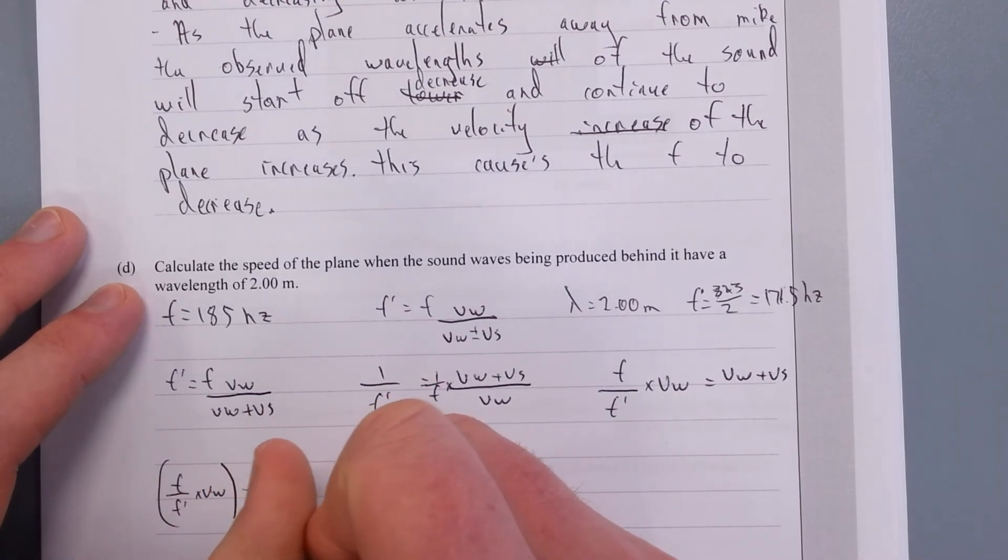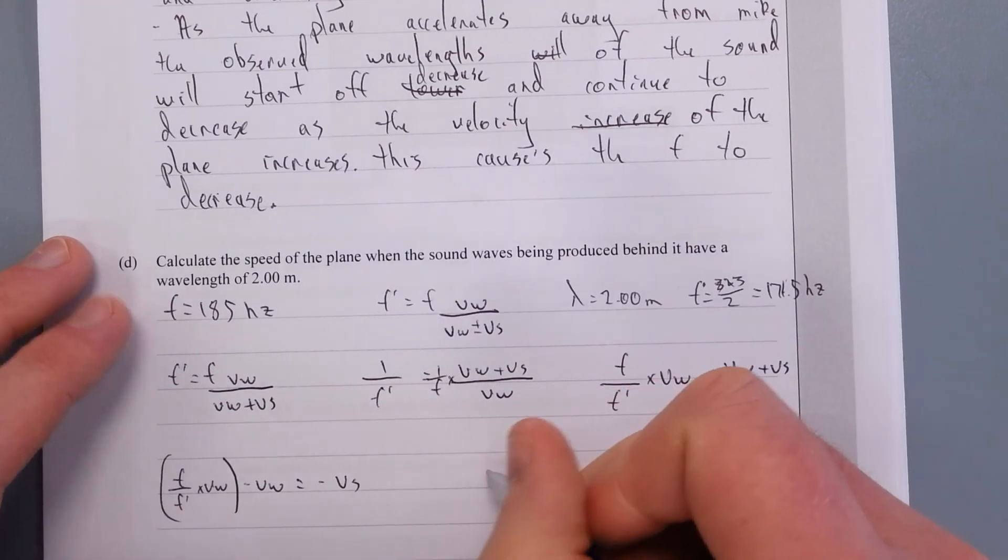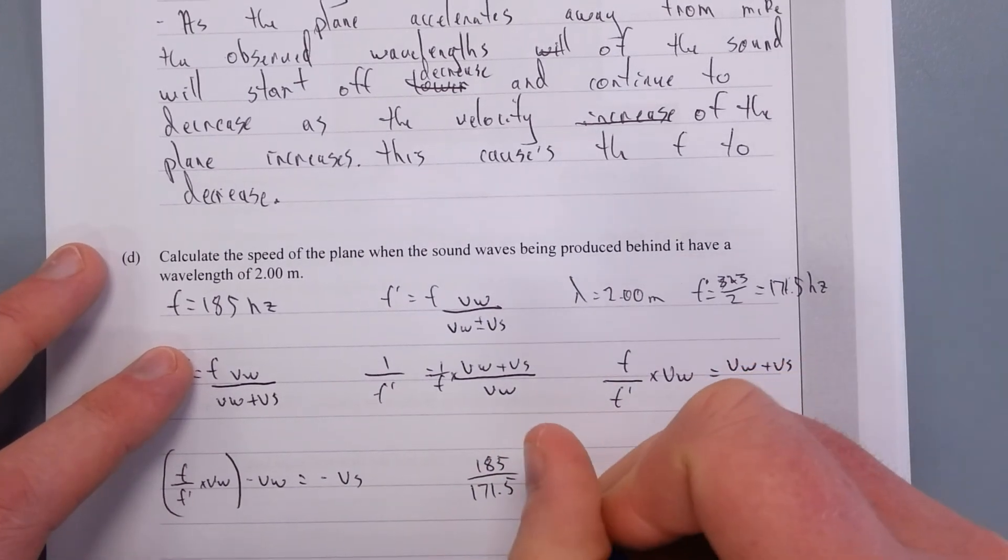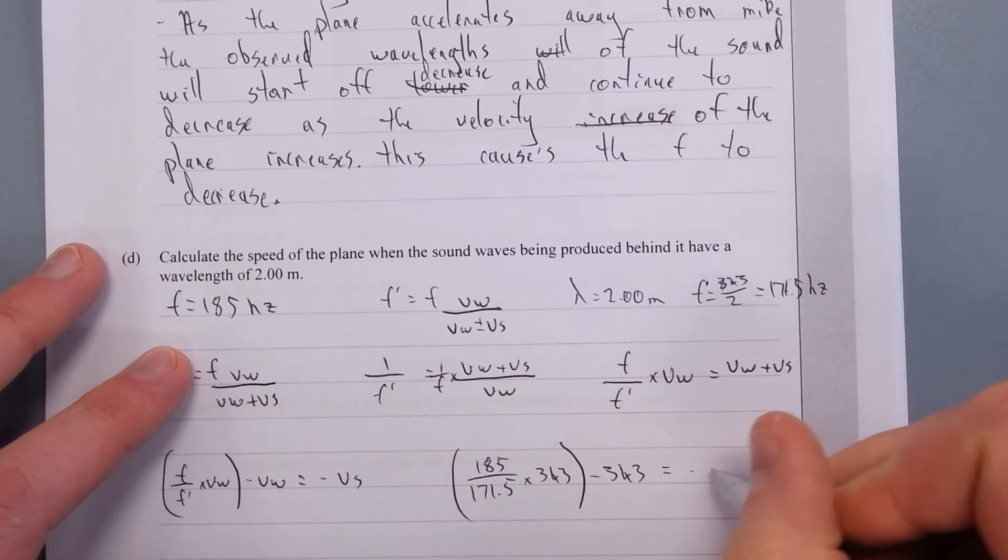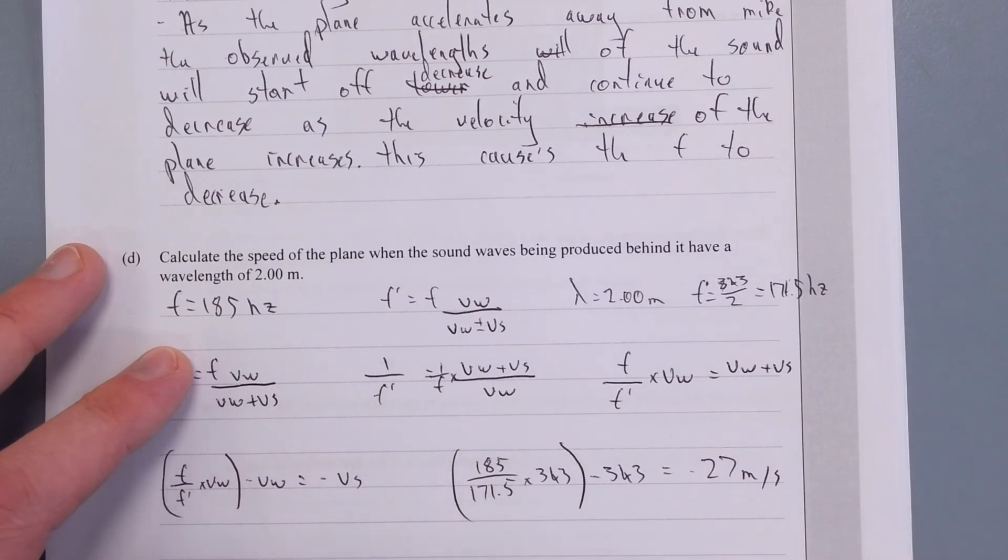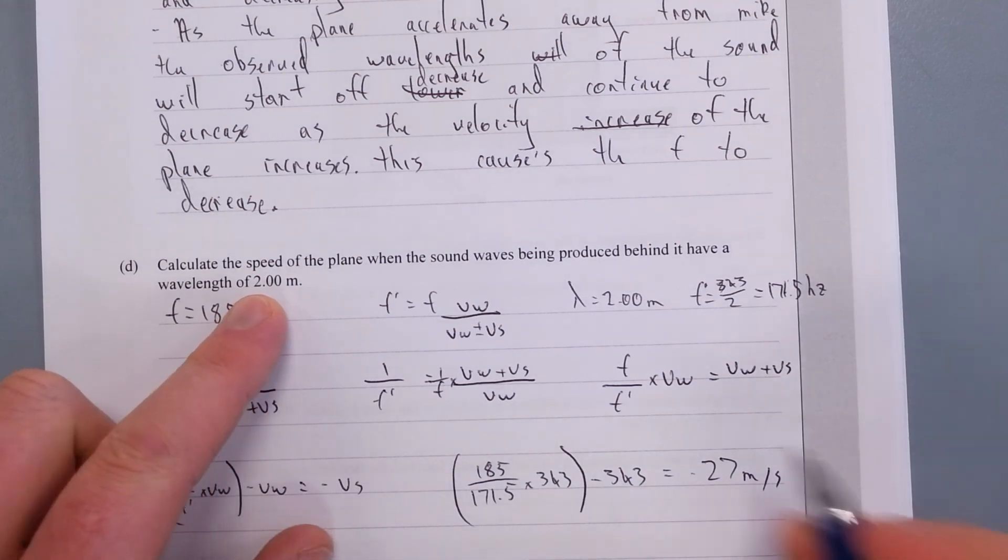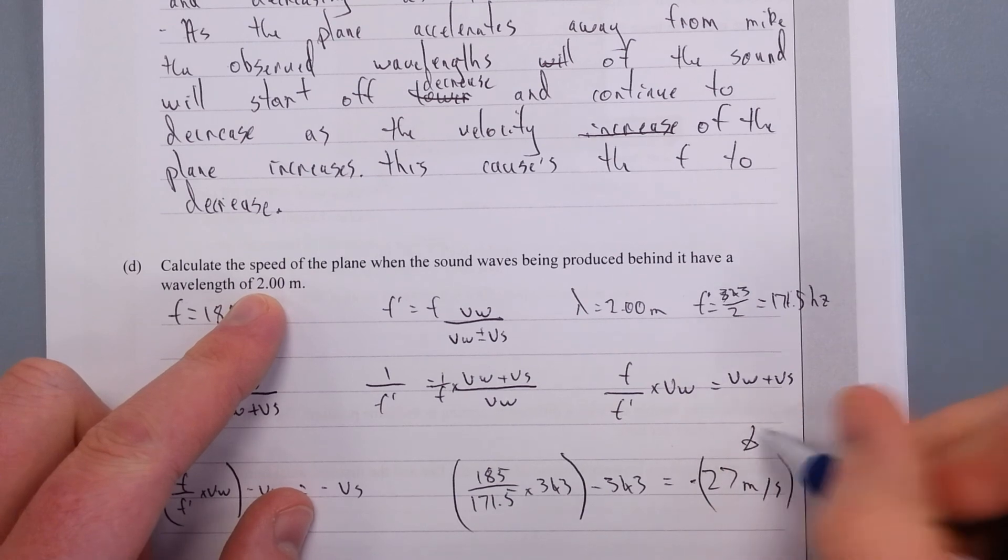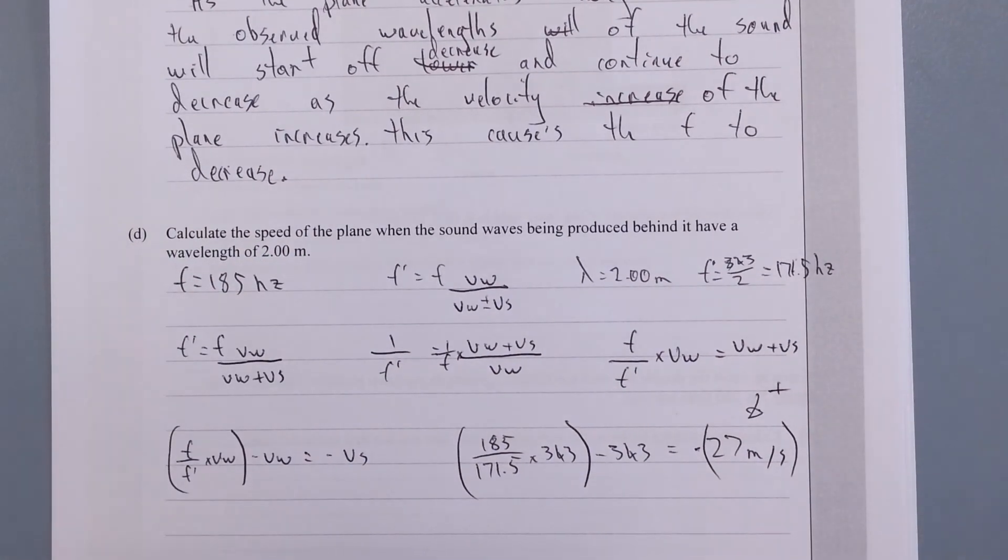V_S is going to equal to F over F dash times V_W minus V_W. What I do now is plug it in. So I'm going to get F is 185 over F dash 171.5 times 343 minus 343, and that gives me minus 27 meters per second. All my answers have to be 3 sig figs, so I'm going to make that 27.0. And because this is minus, this answer minus implies that this is positive. So the speed is equal to 27.0 meters per second.